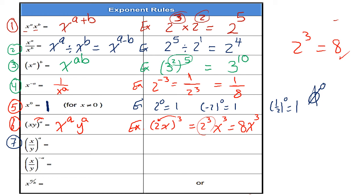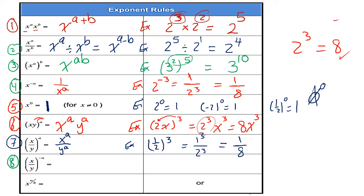Rule number 7: if I have a fraction with a positive power, I can distribute the power to the numerator and denominator. For example, one-half to the power of 3 gives 1 to the power of 3 over 2 to the power of 3, which is 1 over 8.